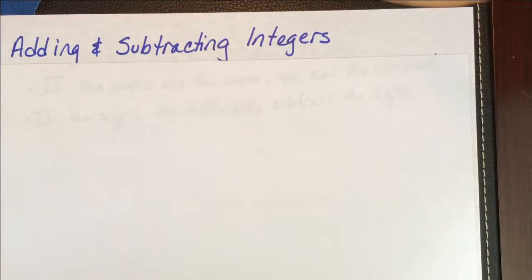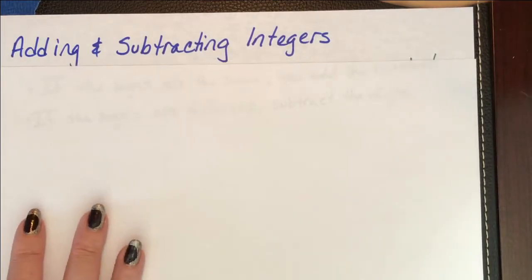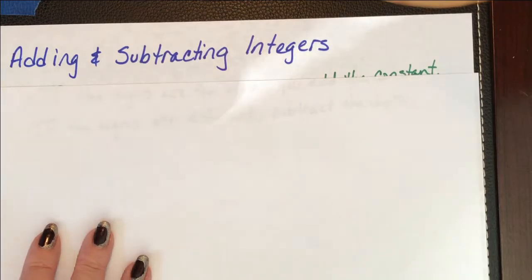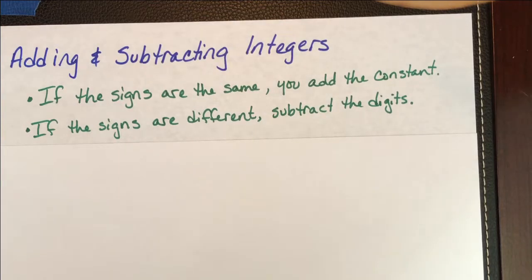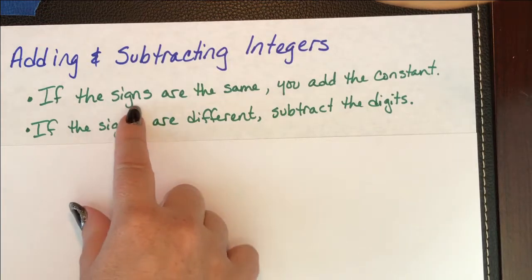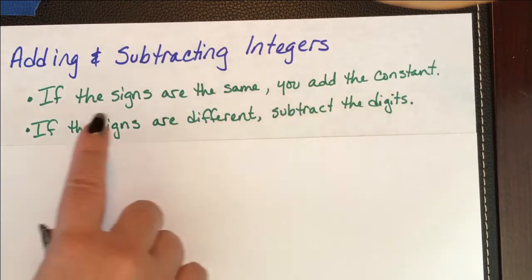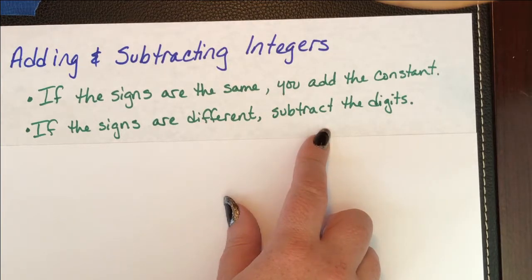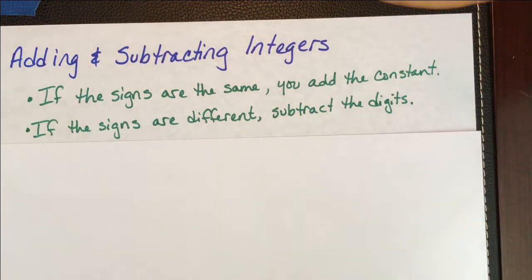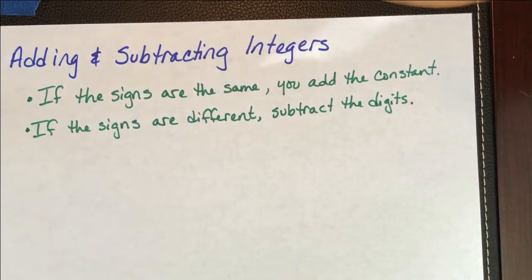So we're going to start by reviewing the basics of adding and subtracting integers. I know there are a lot of ways of thinking about it, and you've probably been taught a couple of different ways. What I'd like to do is just break it down to the basic rules. If the signs are the same, you add the number, and if the signs are different, you subtract the number. Really, that's all. So what we need are a few examples to try.